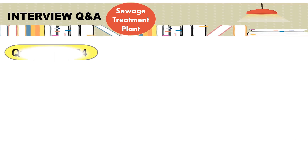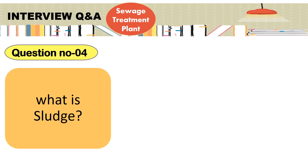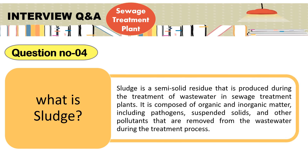Question number 4: What is sludge? Sludge is a semi-solid residual that is produced during the treatment of wastewater in sewage treatment plants. It is composed of organic and inorganic matter, including pathogens, suspended solids and other pollutants that are removed from the wastewater during the treatment process.